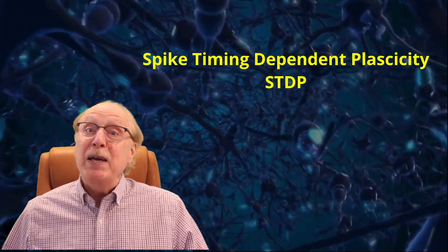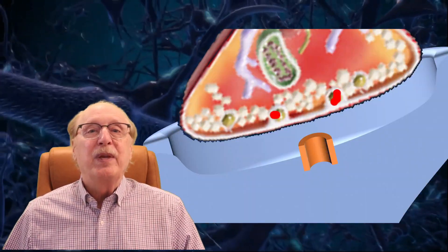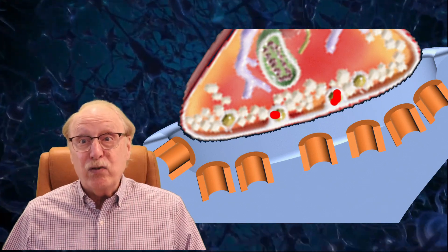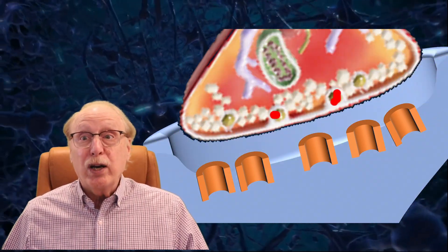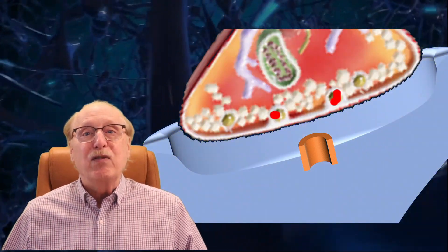STDP is a specific mechanism by which synapse weights change depending on the timing relationships of neural spikes on either side of the synapse. Hence, the name Spike Timing Dependent Plasticity. If the postsynaptic or target neuron fires shortly after the presynaptic or source neuron, the weight increases. If the target neuron fires shortly before the source, the weight decreases.